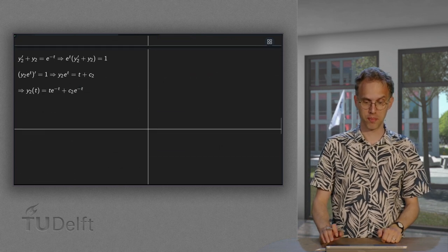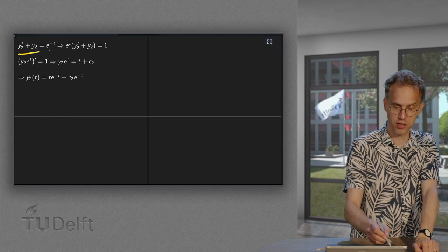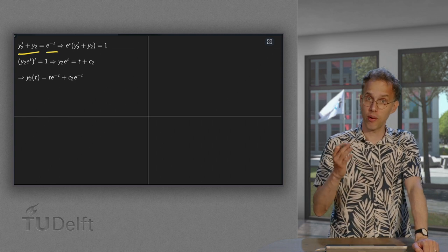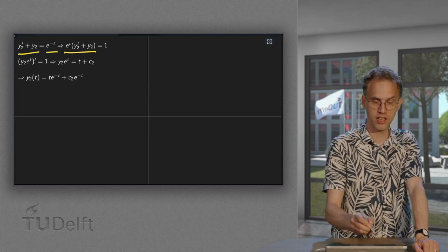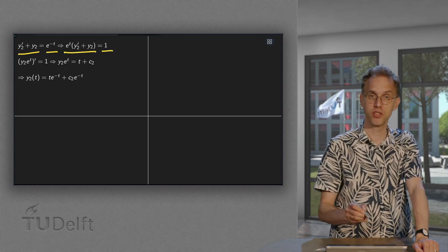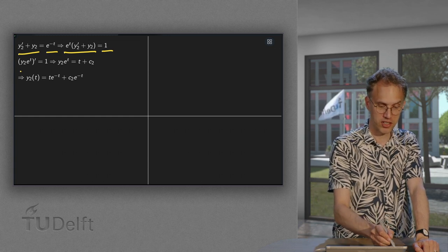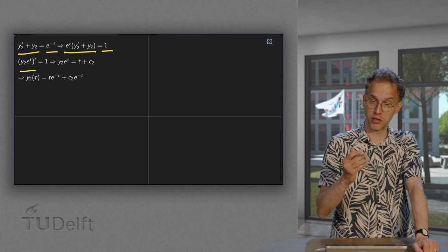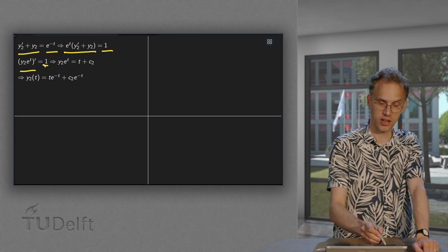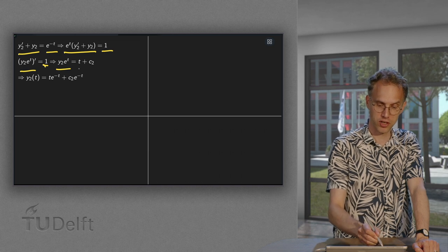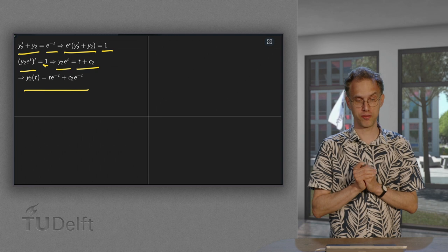So now we have found y1(t) onto y2(t). We can use the same method. We know y2 prime plus y2 equals e to the power of minus t. Now our integrating factor is e to the power of t. So multiply with e to the power of t left and right. The right-hand side, you just have a 1. Now, again, the left-hand side equals y2 times e to the power of t prime equals 1. Integrate. You get y2 e to the power of t equals t plus c2. And solve, and you find your y2(t).